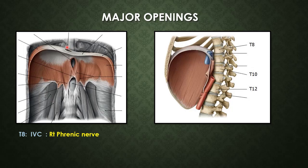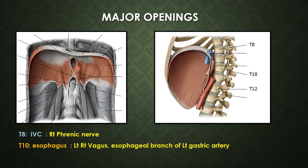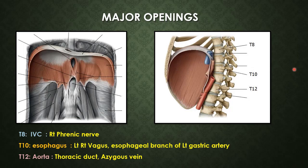Along with the inferior vena cava, the right phrenic nerve also passes through the IVC opening. The left phrenic nerve passes directly through the left cupola or left dome of the diaphragm. Along with the esophageal opening we find the left and right vagus nerves and the esophageal branch of the left gastric artery. Left and right vagus nerves continue respectively as the anterior and posterior vagal trunks after rotation of the stomach. Along with the aorta, the thoracic duct and azygous vein pass through the aortic opening. The left crus has muscle fibers arranged around the esophageal opening which prevent regurgitation during diaphragm contraction and increased abdominal pressure.